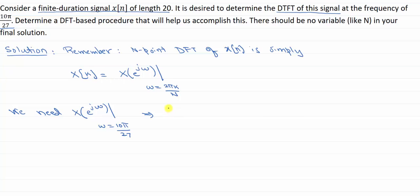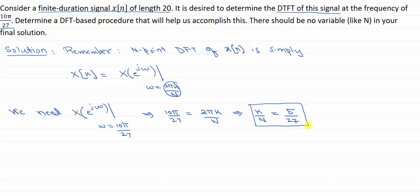If we break it down into the form 2π k over N, we see that we need 10π over 27. This is equal to 2π k over N. Solving, we see that we need k over N to be equal to 5 over 27. This is our key relationship — we should compute an N-point DFT and look at the kth sample such that k over N equals 5 over 27. The easiest choice is to select N equals 27.